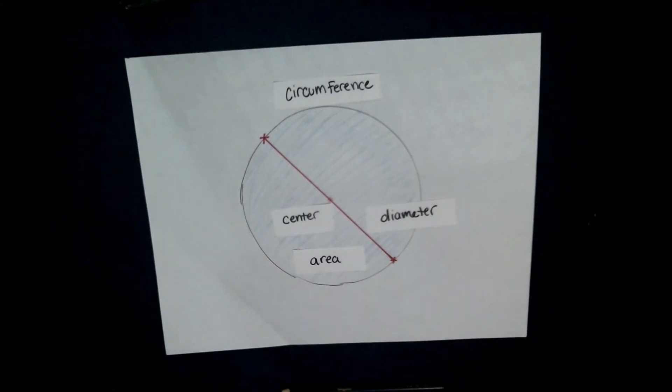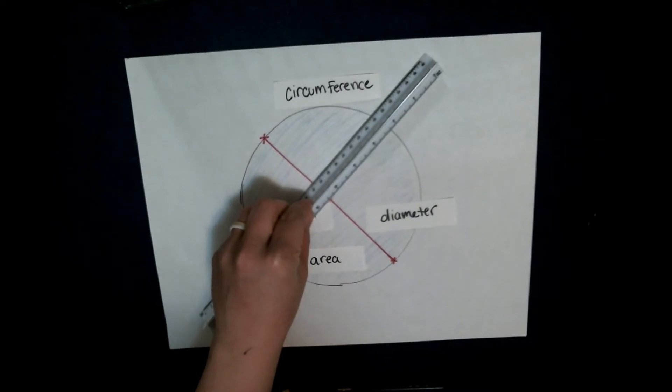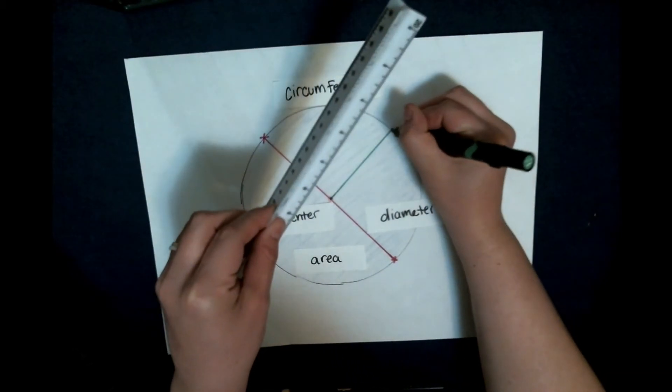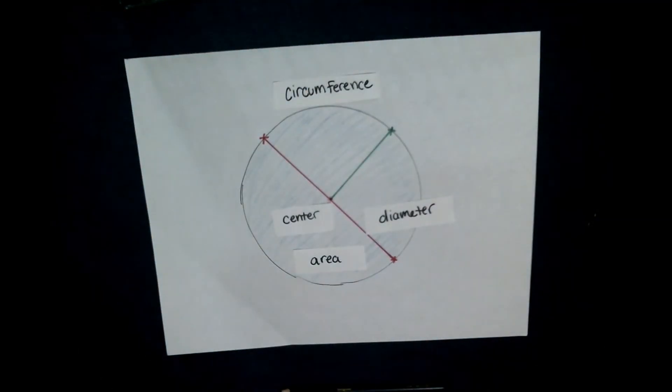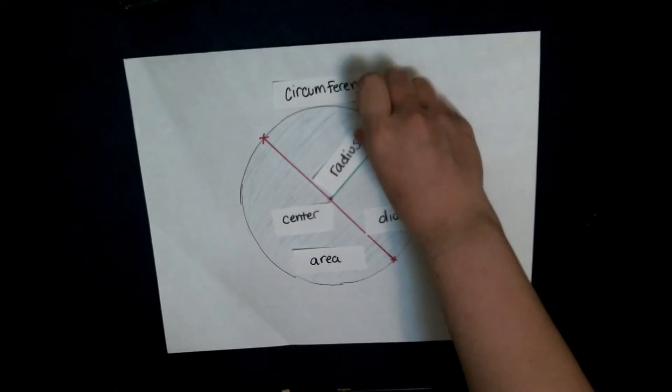That's real important. I want to draw one more special line for you. This is going to be a line that comes from the center of the circle to one point on the circumference. It's a very important line. It's called the radius.